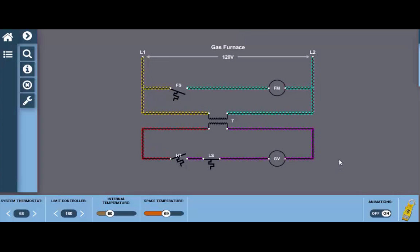If we take a look we have three electrical loads here. We have the fan motor or the indoor fan motor. We have the transformer which will step down the line voltage of 120 volts to the control circuit voltage of 24 volts and then we have a 24 volt gas valve here which will allow gas to flow to the burners and be ignited by the pilot.